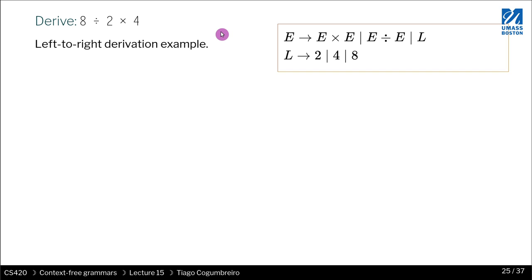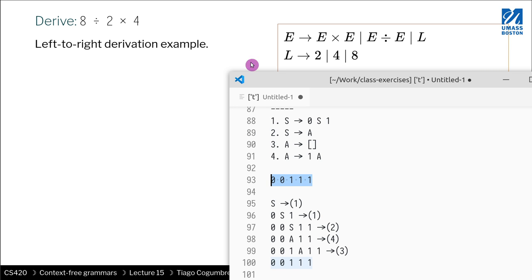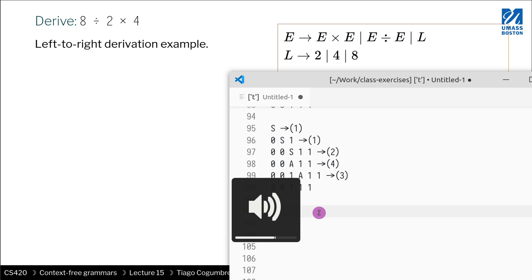So how would we do this? We start from E, and then we use rule one. Actually, we could do it either way. Let's do two. And let's do E divided by E.